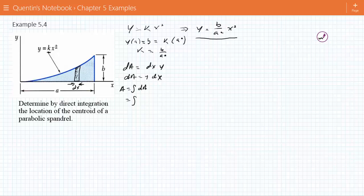Well I'm going to go from 0 to a of y dx. So it's integral from 0 to a, y is what? y is b over a squared x squared times dx. So area is going to be 1 third b over a squared x cubed evaluated from 0 to a, so area ends up being 1 third a b.